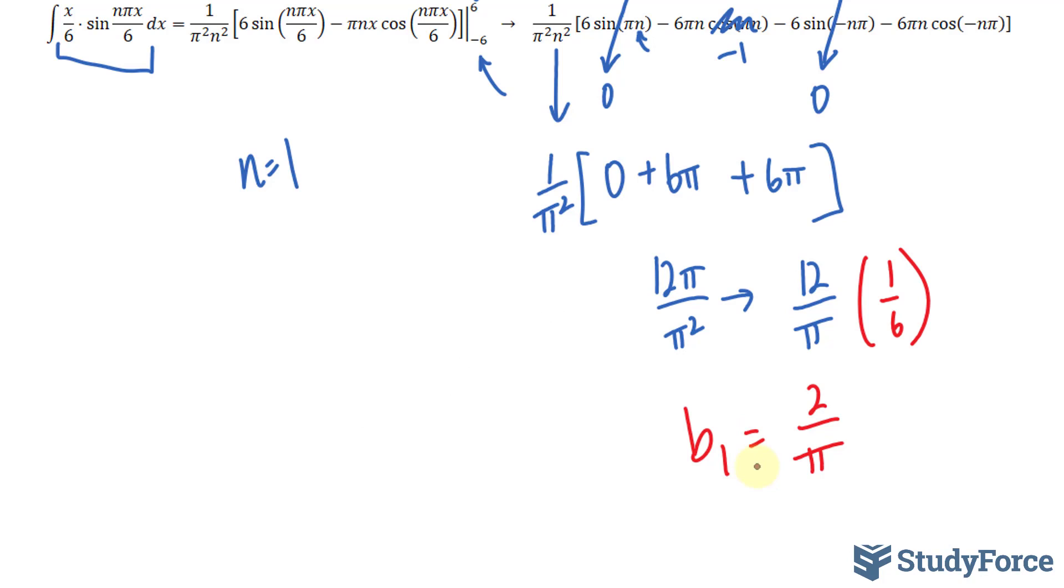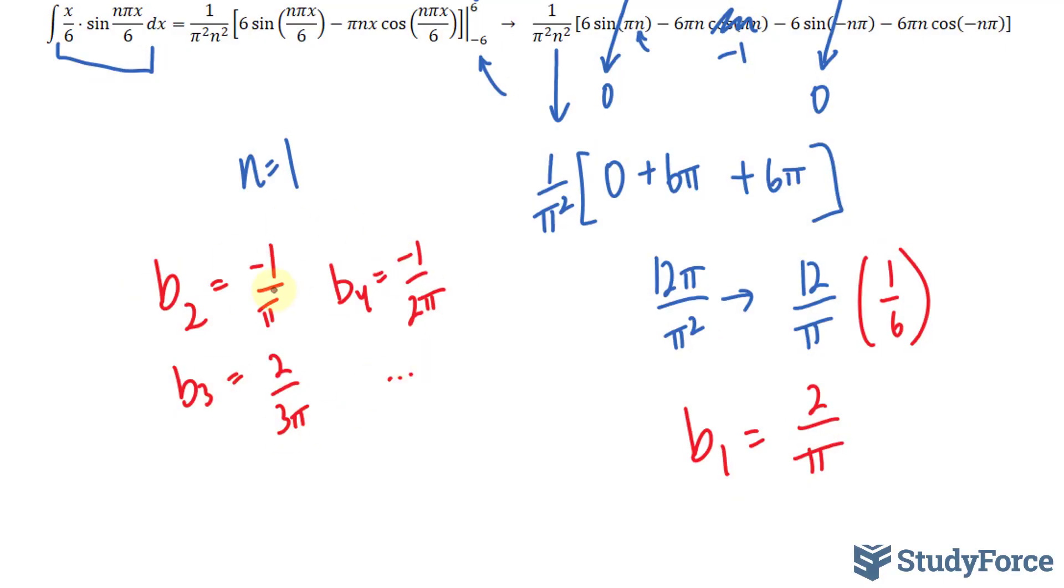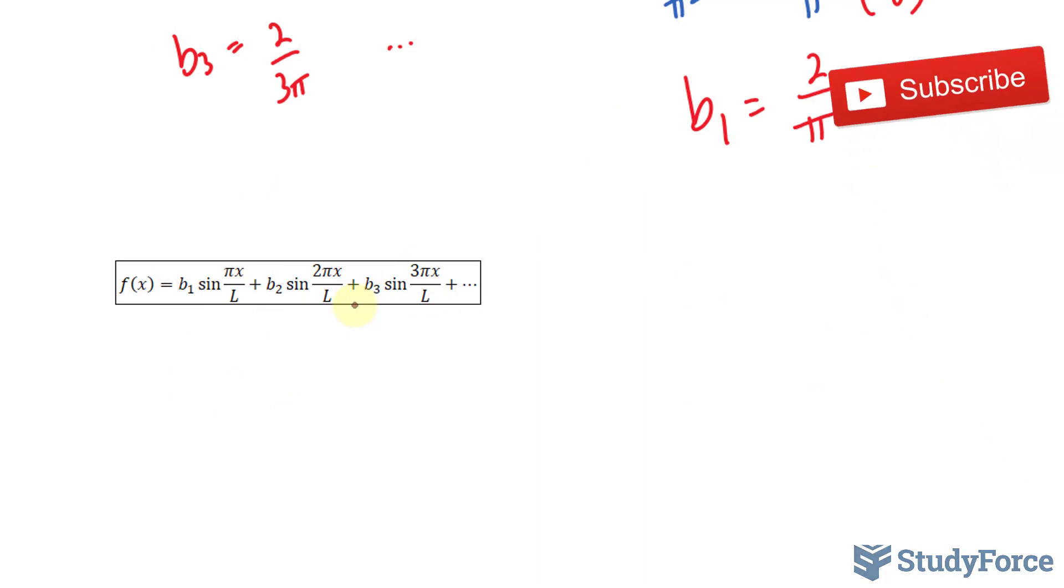Notice the amount of work required just to find a coefficient. So without going through all of the work to find b sub 2, sub 3, sub 4, sub 5, this is what they should be. And now, let's input these into our general formula. Once again, here it is on your screen. So b sub 1 will be replaced with 2 over π. f of x is equal to sin πx over 6.